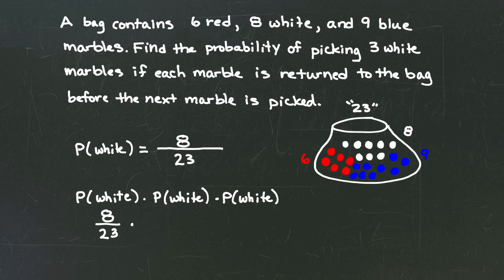And so the probability of getting white on the second turn is also eight out of twenty-three. And then finally the probability of getting white on the third turn, well that's also eight out of twenty-three because each time we put the marble back in the bag so we're starting fresh all over again.